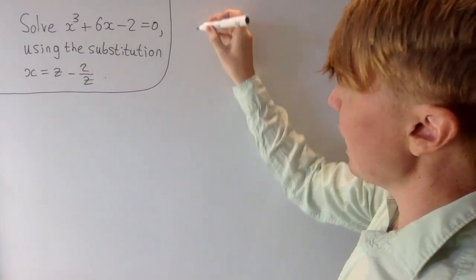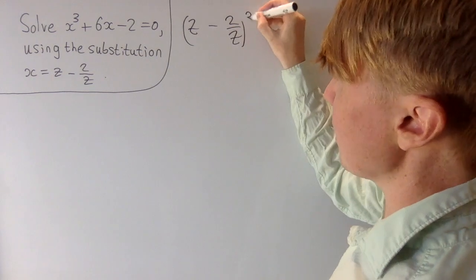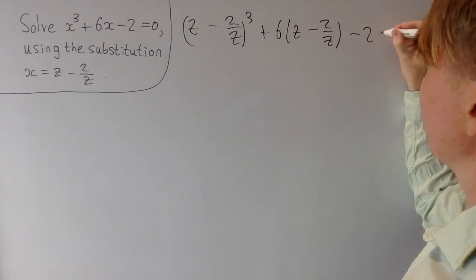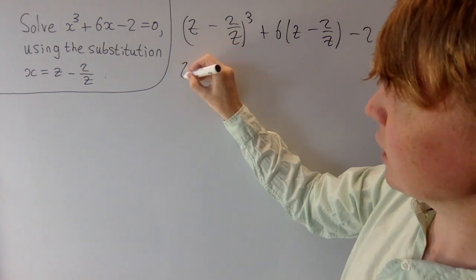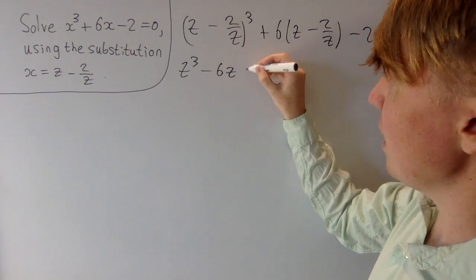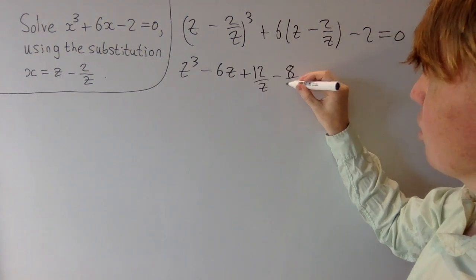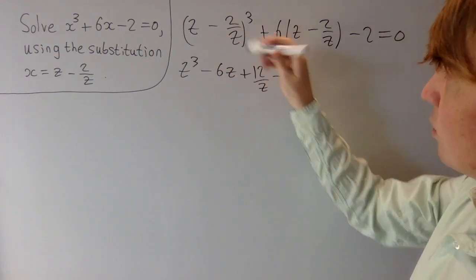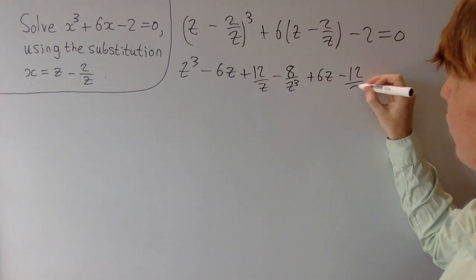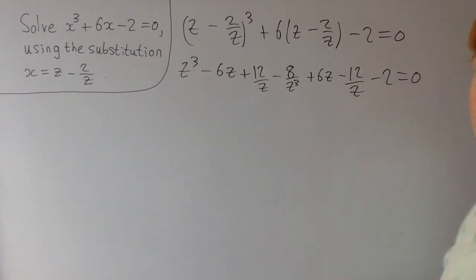We replace all of our x's by z minus 2 over z, substitute these in, then we'll need to expand the brackets and tidy up and see if we can solve to find z. Expanding this first bracket: z cubed, then minus 6z, then plus 12 over z, and finally minus 8 over z cubed. We also get plus 6z and minus 12 over z from the next term, finally with a minus 2, and all of this is equal to 0.